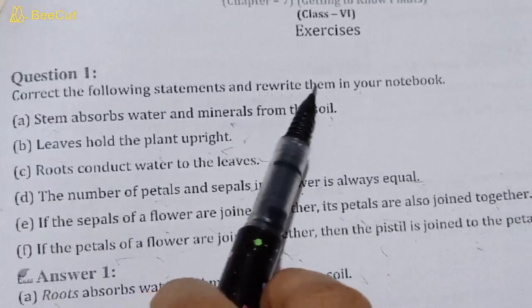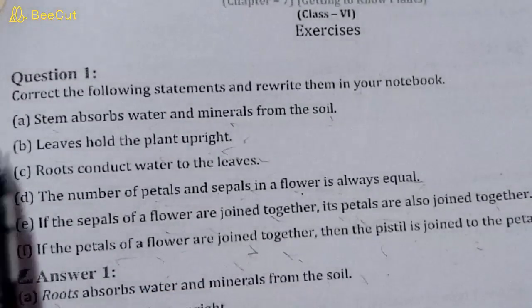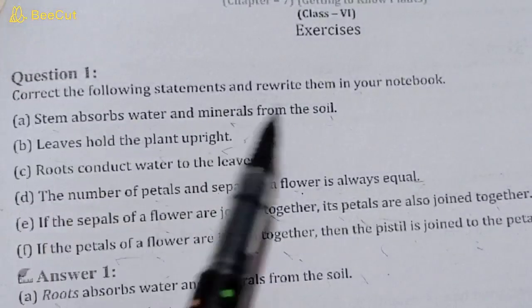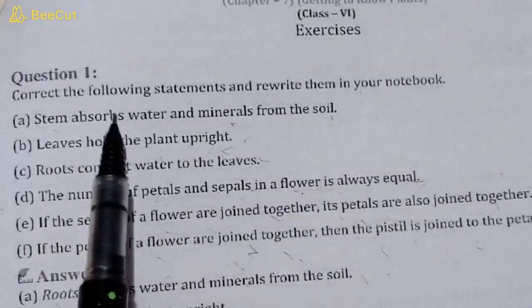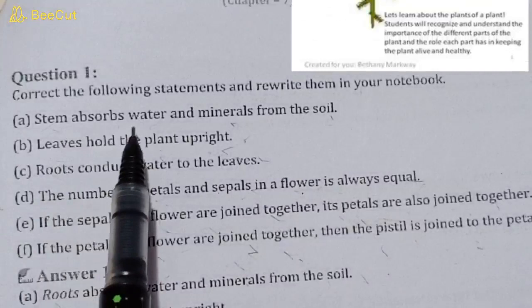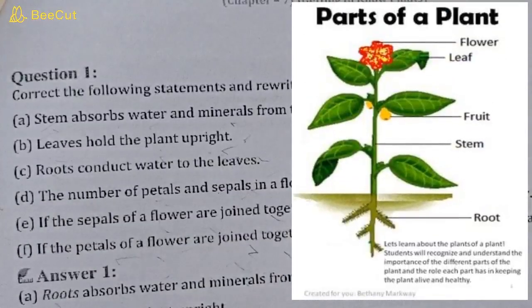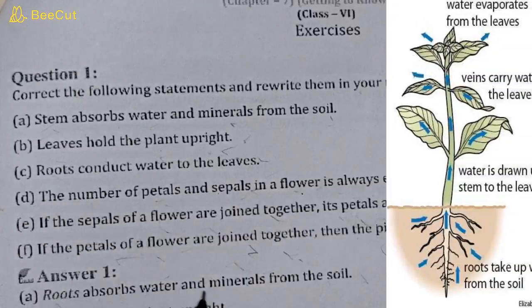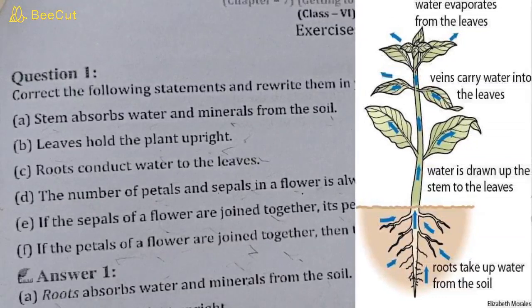So question number one: correct the following statements and rewrite them in your notebook. You have to correct these statements and then write them again in your notebook. First statement: stem absorbs water and minerals from the soil. The answer is: roots absorb water and minerals from the soil. Stem does not absorb, roots absorb.